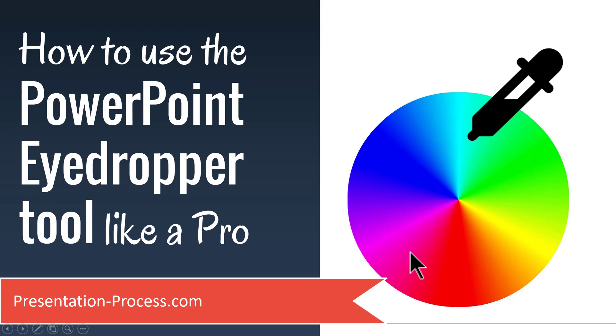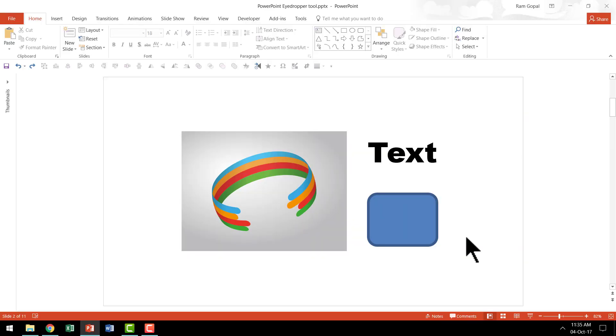Now what is the PowerPoint eyedropper tool? It is a wonderful tool that allows you to pick the color from one object and apply it onto another object flawlessly.